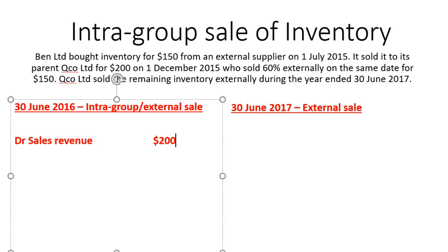The $150 of sales revenue that Qco recognised is perfectly acceptable from the group's perspective, because it was sold to an external party — we will receive cash for it, and so we will actually have an increase in our resources as a result of this sale. The next thing we'll do is credit COGS by $180.